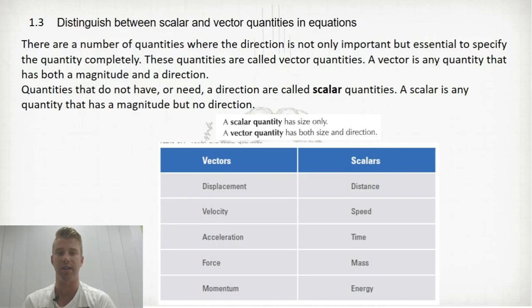So a scalar quantity, and this is what I want you to highlight, which is above the table, is a scalar quantity has size only. A vector quantity has both size and direction.